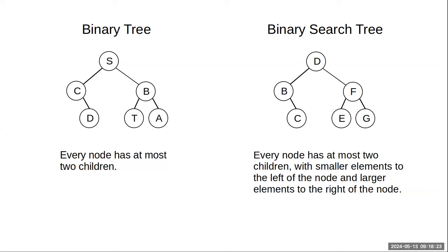In both a binary tree and a binary search tree, you have at most two children. In a binary search tree, the property — smaller to the left, larger to the right — is one we depend on to make things work. We can also use it to verify that when we manipulate the tree it's still correct. If that property ever gets broken, we no longer have a binary search tree.